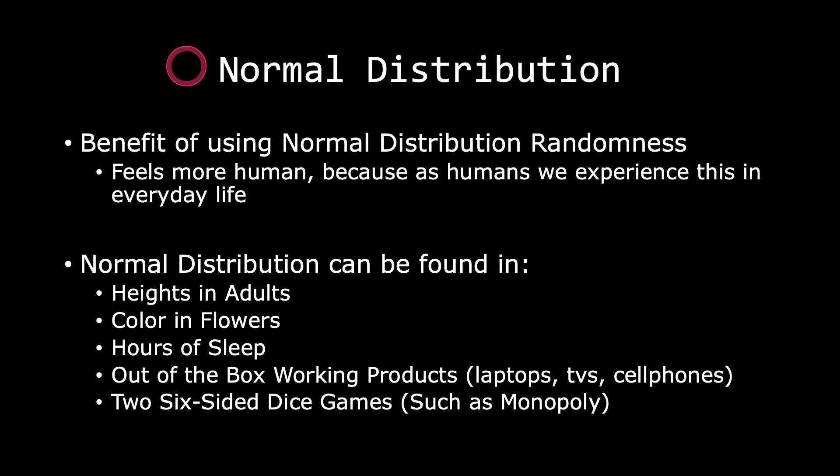The benefit of using normal distribution randomness is that it feels more human. This is simply because as humans, we experience normal distribution in our everyday life. We can find normal distribution in the heights of adults, the color of flowers — for example, not all roses are equally red, not all white roses are equally white. We also see it in hours of sleep, where the average tends to be six to eight, and it is abnormal to be under or above that, depending on your age range.